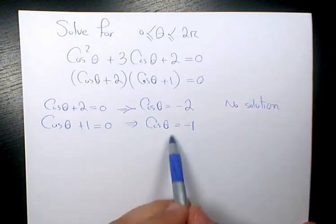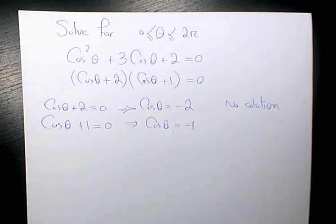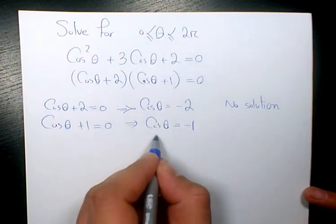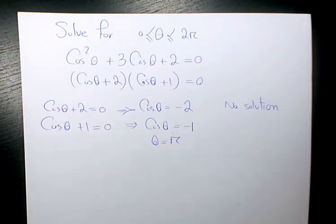And here we have cosine theta equals to negative 1. Yeah, we can solve this one. And from 0 to 2π, we have theta equals to π because cosine π will be equal to negative 1. So we have only one answer and that answer is π.